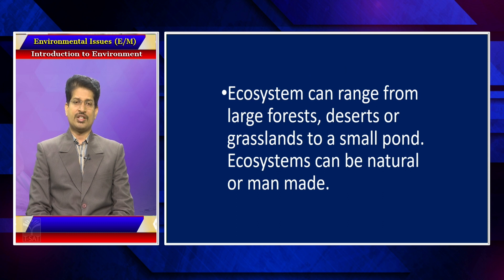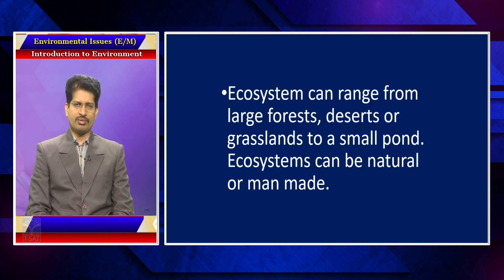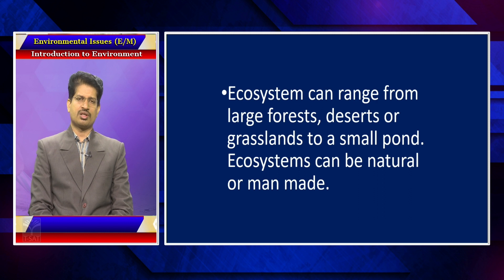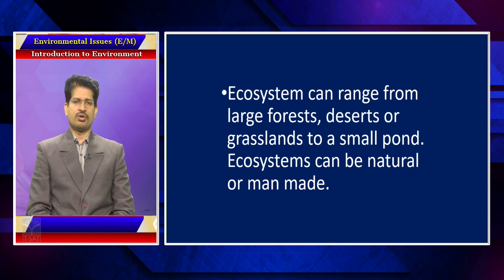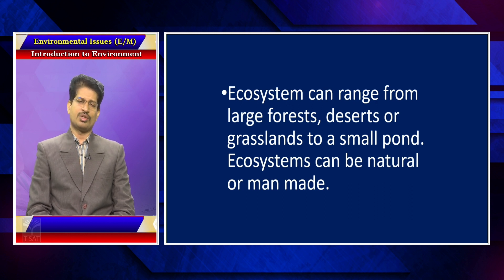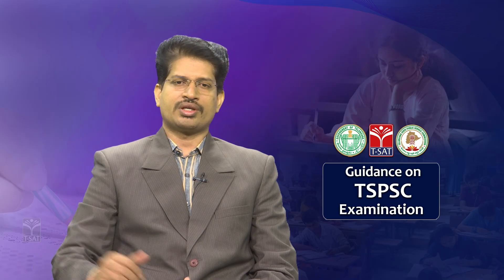Ecosystems can range from large forests, deserts, or grasslands to small ponds. Ecosystems can be natural or man-made. You have aquatic ecosystems — for example, the marine environment, the ocean, the lakes, the rivers. The terrestrial ecosystems include forests, deserts, ice caps, and glaciers. Different topographical features of the earth have different ecosystems, both man-made and natural.